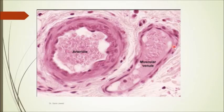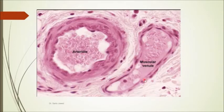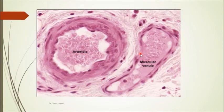In a vein, tunica intima and tunica media are present but the layers are not thick — the wall is thin compared to an arteriole. With the collapsed lumen you can easily identify it. Compared to a capillary, a vein has a quite larger lumen and a thicker wall, while compared to an artery it has a thin wall.